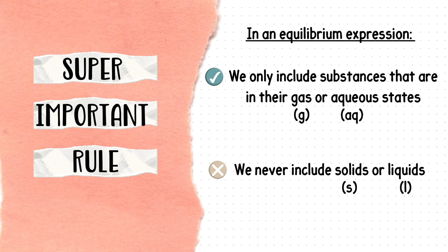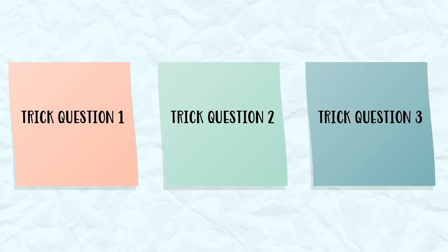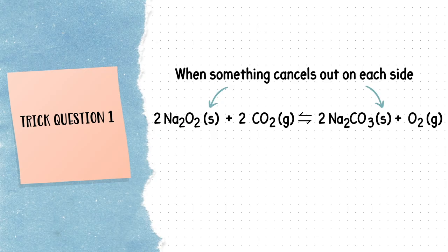Keeping this rule in mind, here are the three trick questions to watch out for. Trick question number one is when something cancels out on each side.